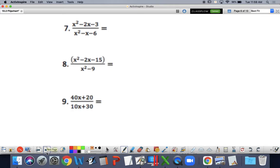Let's start factoring. For number 7, I have to think about what two numbers multiply to give me negative 3, add to give me negative 2. Negative 3 and positive 1. In my denominator, 6 always is a tricky one. Multiply to give me a negative 6, add to give me a negative 1. Negative 3, positive 2. I cancel out my common factor. In this case, it's x minus 3. And I'm left with x plus 1 over x plus 2. No more simplifying can occur.